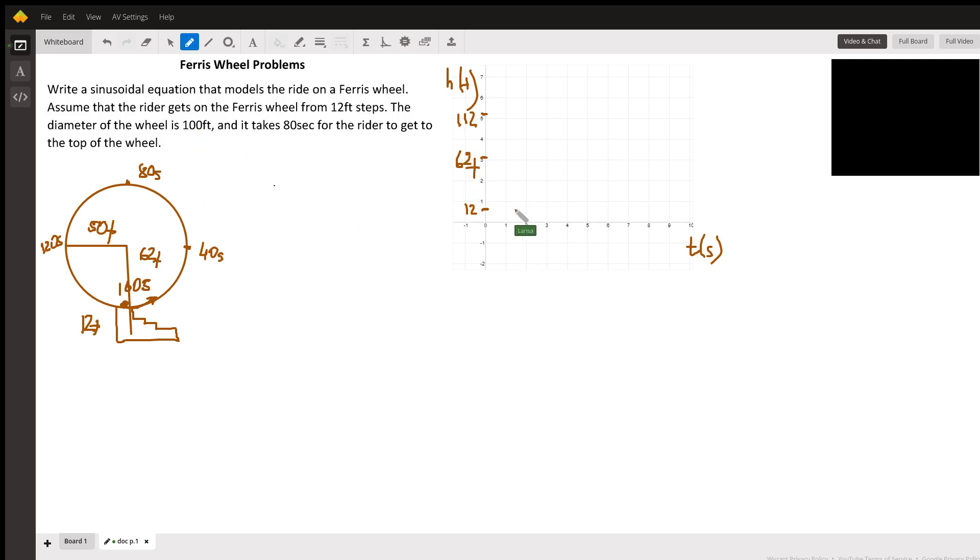So at time zero, we're at the bottom. One full revolution is 160 seconds - that's the period. At 80 seconds we're at the top, at 40 and 120 seconds we're in the middle. So we're at the bottom at zero and 160 seconds.